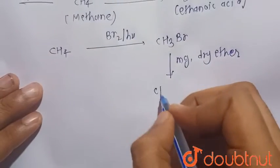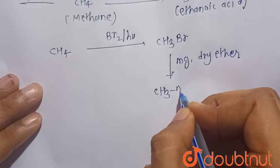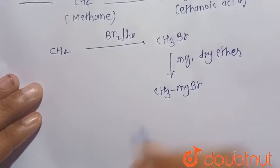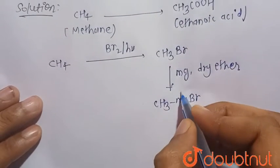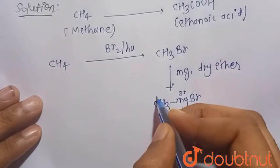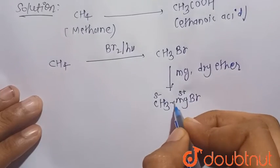That is the formation of the Grignard reagent, that is CH3MgBr. So we know that magnesium is highly electropositive metal, so it attends delta positive and it attends delta negative because it donates electron toward the bromine side. So this bond becomes polar.